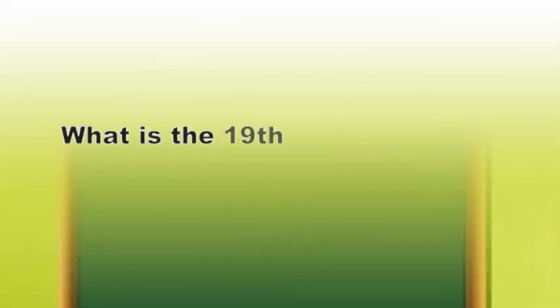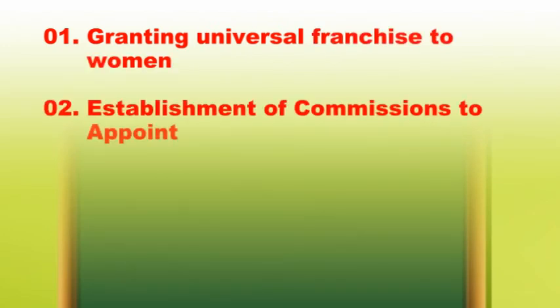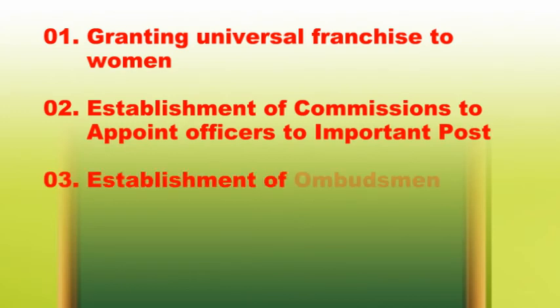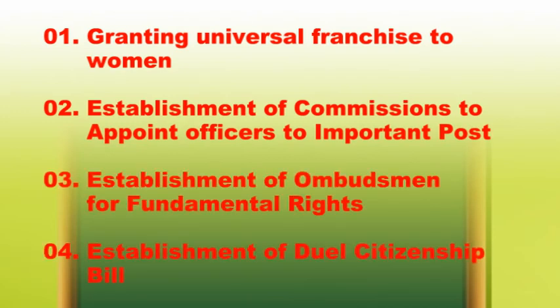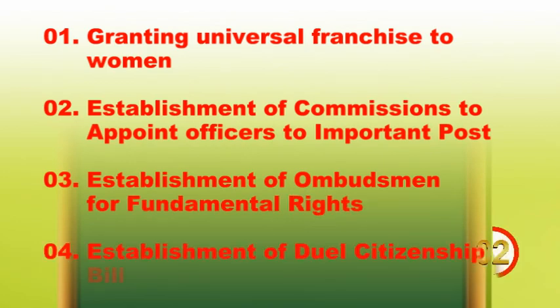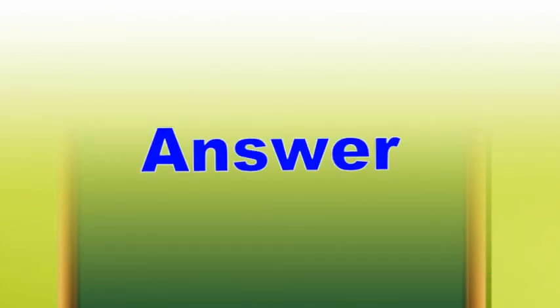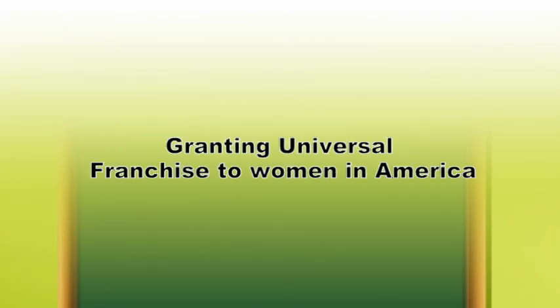Question 18: What is the 19th amendment of the United States of America? 1. Granting universal franchise to women. 2. Establishment of commissions to appoint officers to important posts. 3. Establishment of an ombudsman for fundamental rights. 4. Establishment of a dual citizenship bill. Answer: 1 — Granting universal franchise to women in America.